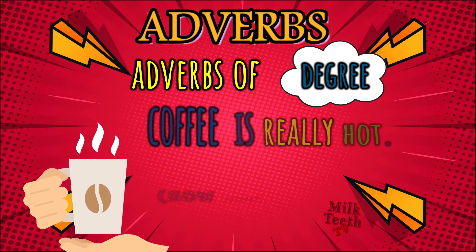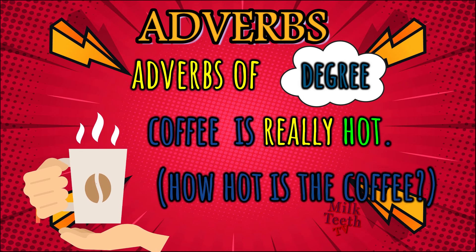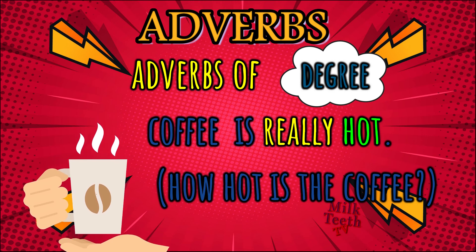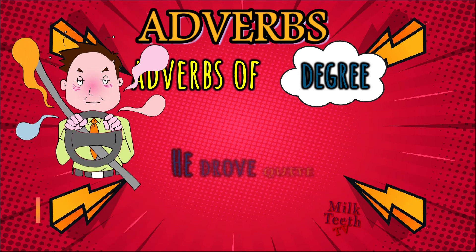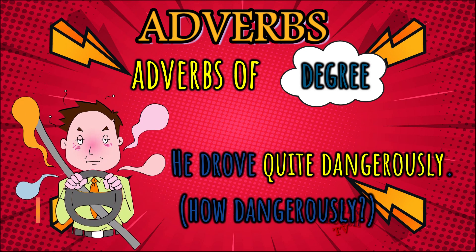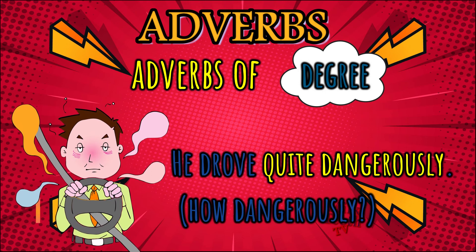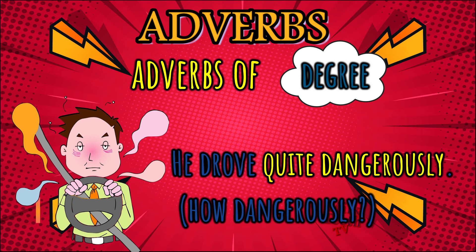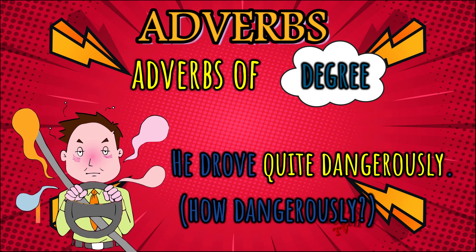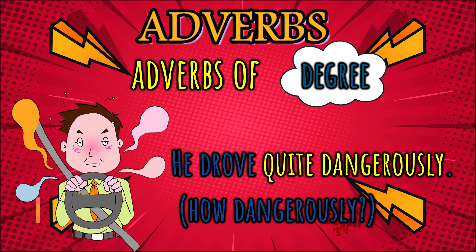The coffee is really hot — 'hot' is the adjective used for the noun 'coffee,' and 'really' is the adverb telling us about the degree of hotness. So 'really' is the adverb of degree used for the adjective. He drove quite dangerously — 'drove' is the verb, 'dangerously' is the adverb describing his driving, and 'quite' is an adverb modifying the adverb 'dangerously' — answering how much dangerously, which is quite dangerously.